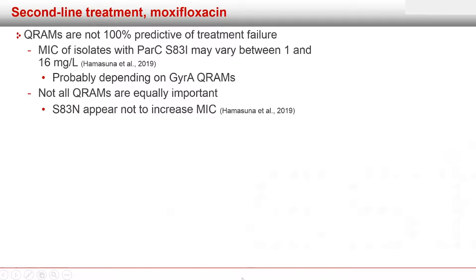Fortunately, QRAMs are not 100% predictive of treatment failure, partly because of a wide range of MICs even with the high-level resistance-mediating S83I mutation, which may vary between 1 and 16 mg/L. In the lower range, high-dose moxifloxacin may be effective; in the high end, the infection may be completely untreatable. These variations depend on simultaneous gyrA QRAMs. Additionally, the S83N amino acid substitution appears not to increase MIC, commonly observed in Japan. We also use the same dose regardless of patient weight, and tissue concentrations of moxifloxacin will differ between patients.